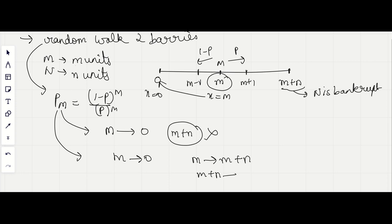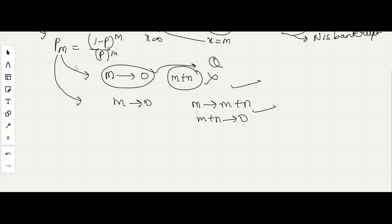Directly from m to 0, let this probability be Q. So (1-P)/P to the power m equals Q plus if he goes to the other direction, that is 1 minus Q. And after reaching the m plus n position, he goes to the 0 position, that would be (1-P)/P to the power m plus n.